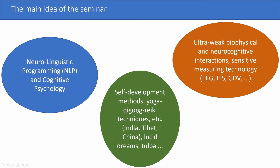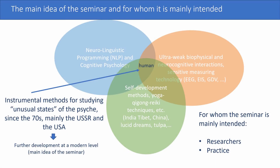The last area is related to self-development — for instance, yoga, Qigong, Reiki, different techniques from India, Tibet, and China, lucid dreaming, and similar approaches. All of them consider consciousness from different sides. Unfortunately, there are not too many interactions between all three areas. The idea is to combine different approaches from psychology, modern measurement technologies, and self-development for a more complementary consideration of unusual human capabilities.